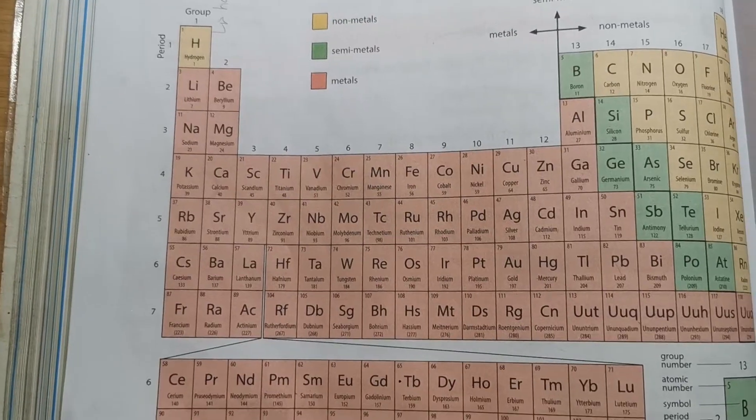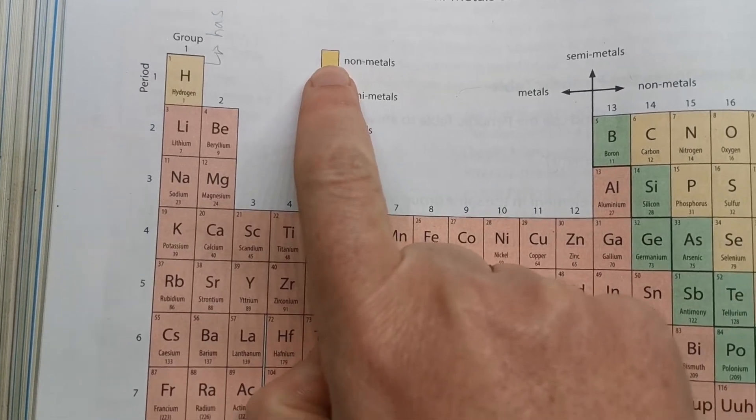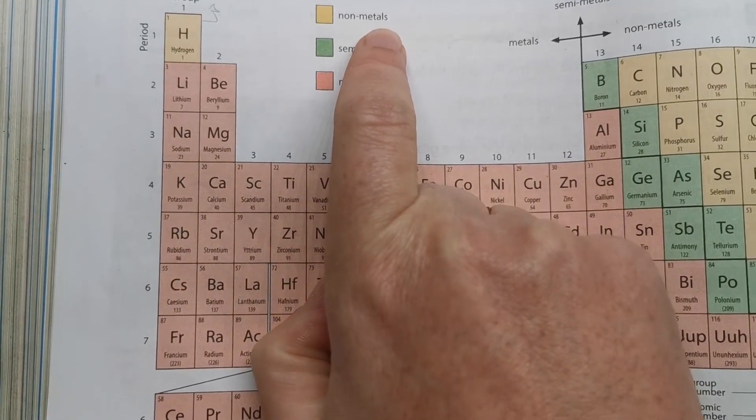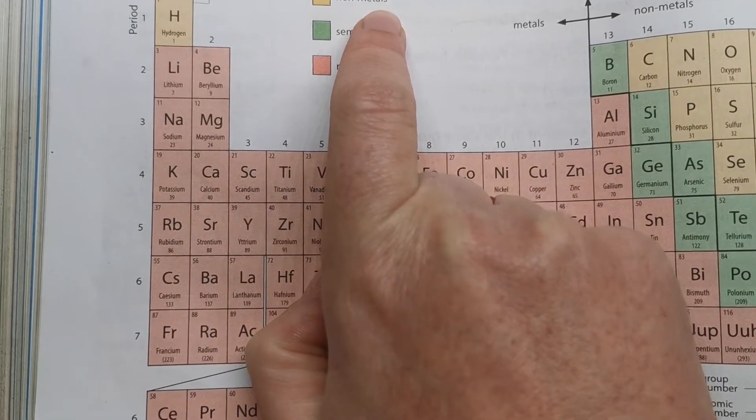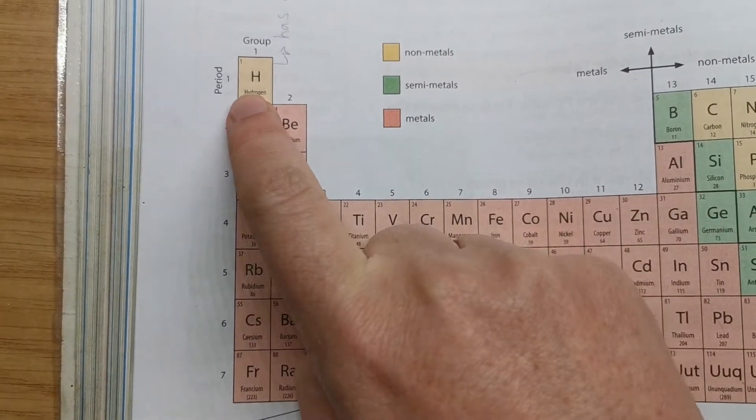Another question that you may get, as you can see, this yellowy color, this mustard color is non-metals. So I might ask you, what other non-metals are in the same group as hydrogen? Here is hydrogen.